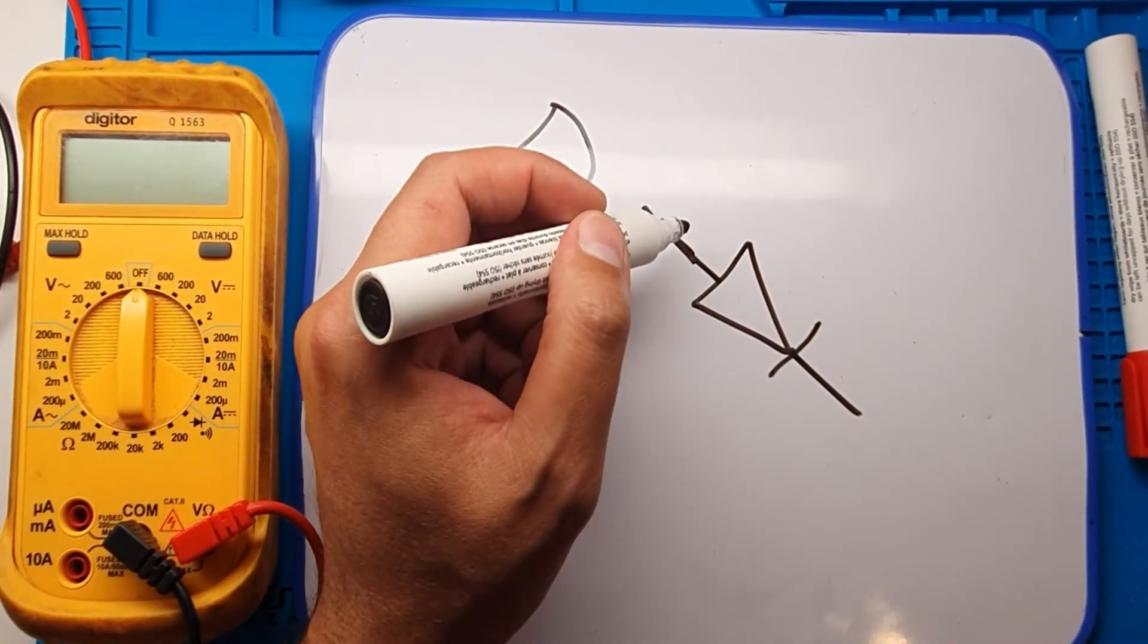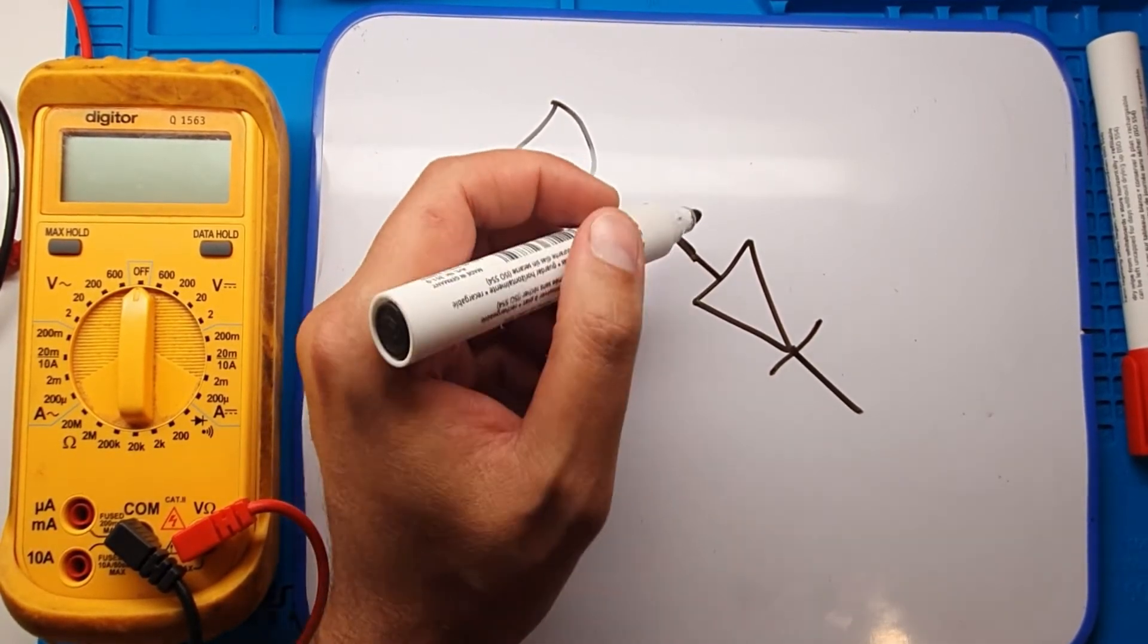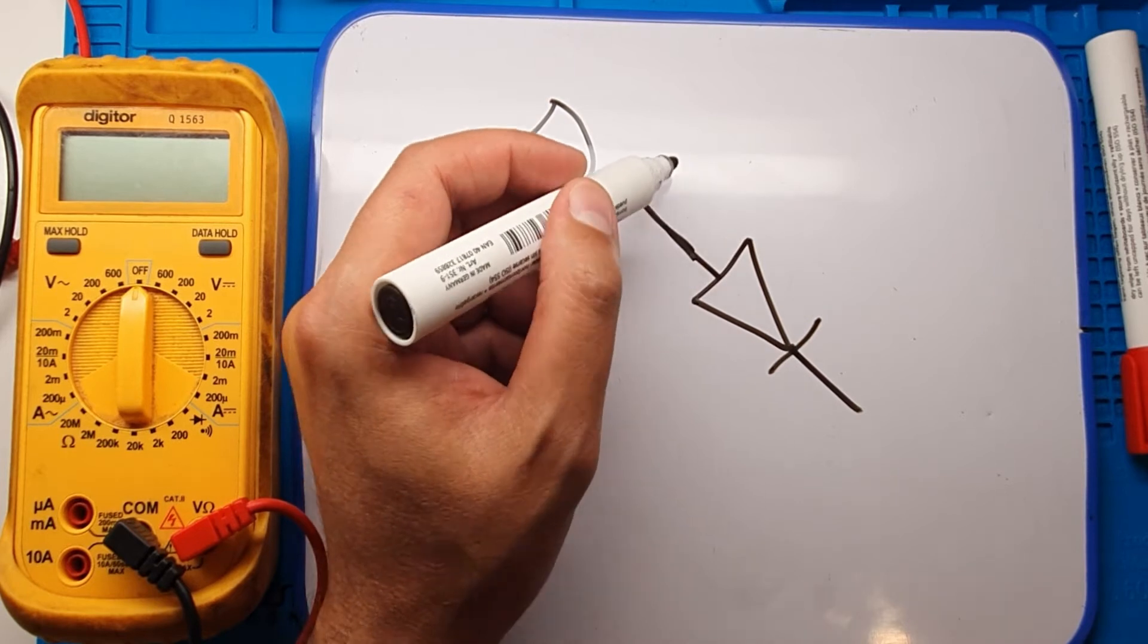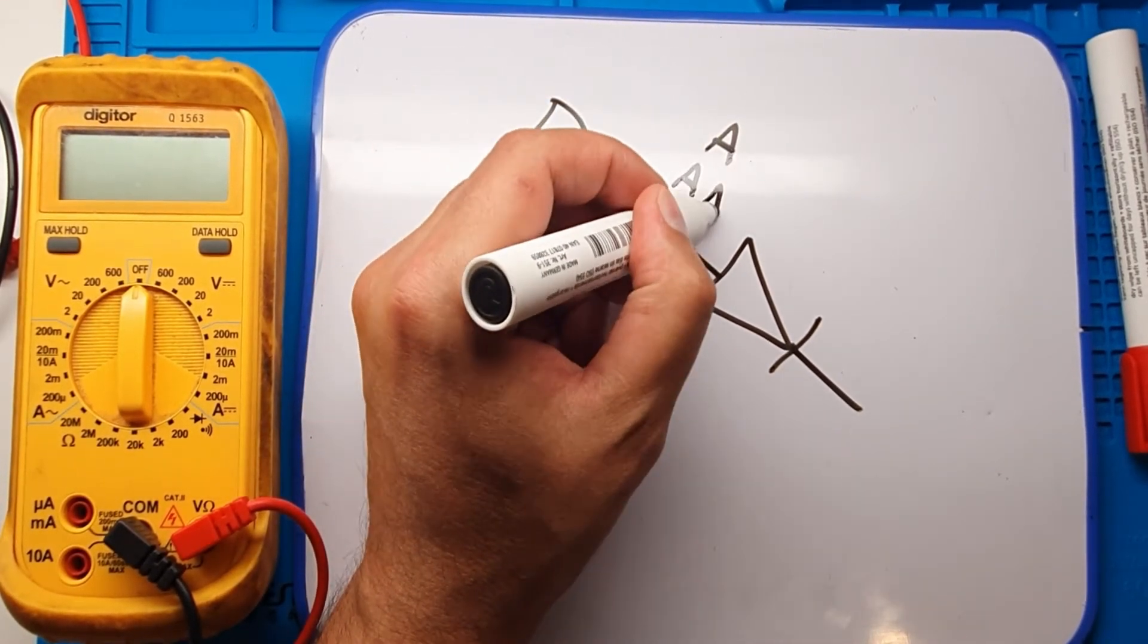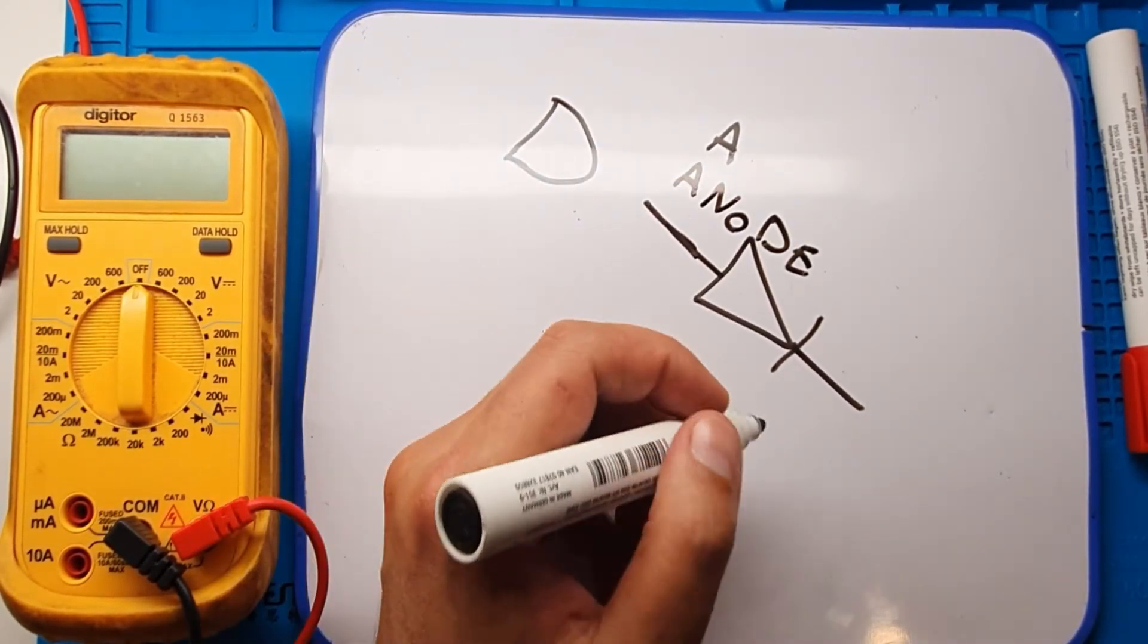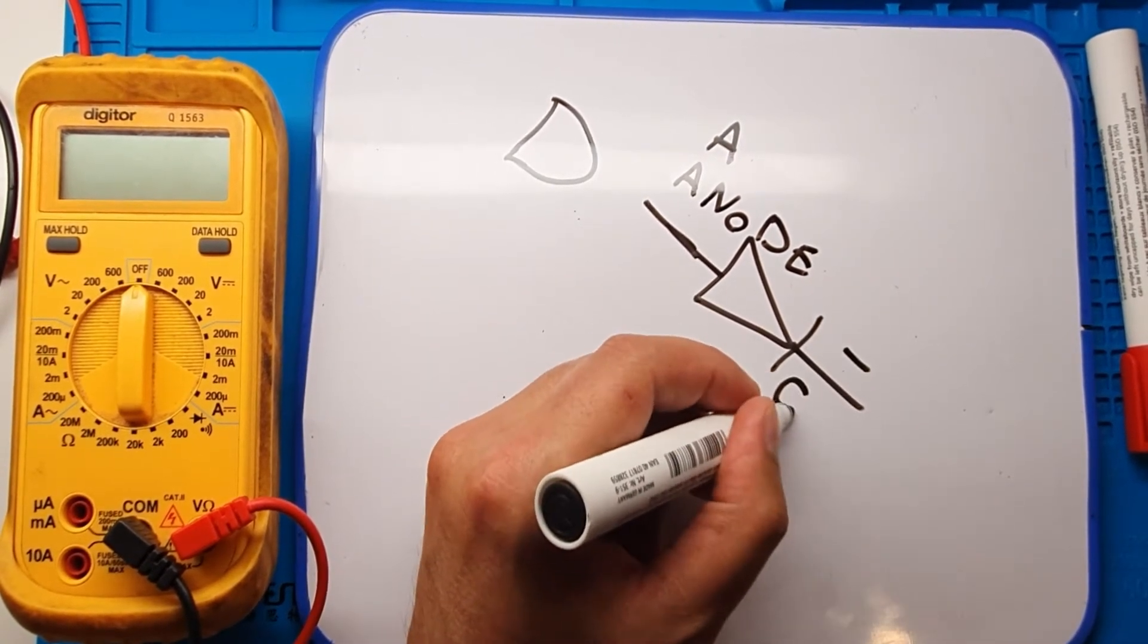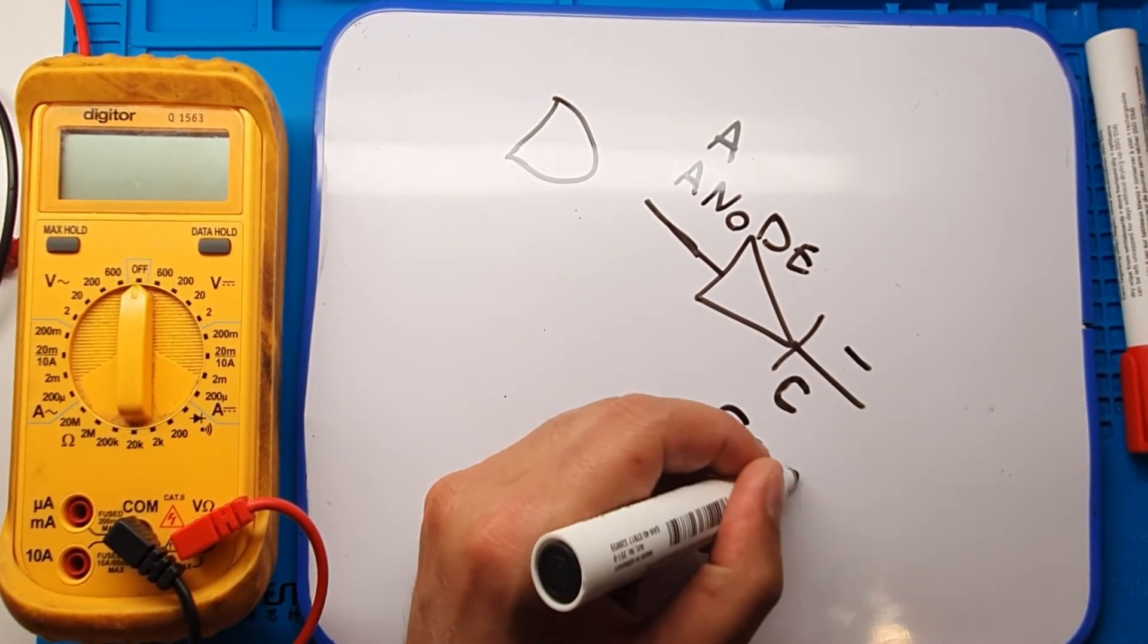Diode has two sides. This is a very simple type. One side, or we can say the positive side, we show by A and say anode. And the other side, negative, we show by capital C and it means cathode.